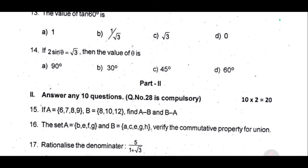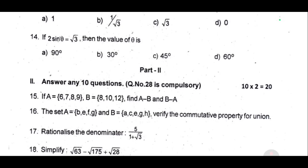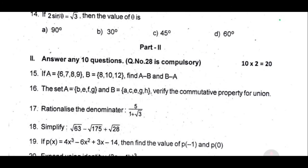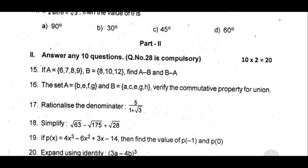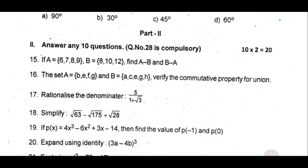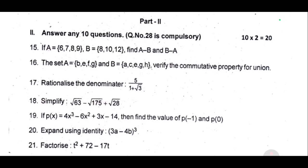17th one, rationalize the denominator 5 by 1 plus root 3. 18th one, simplify root 63 minus root 175 plus root 28. 19th one, p of x equal to 4x cube minus 6x square plus 3x minus 14, then find the value of p of minus 1 and p of 0. 20, expand using identity 3a minus 4b whole cube.